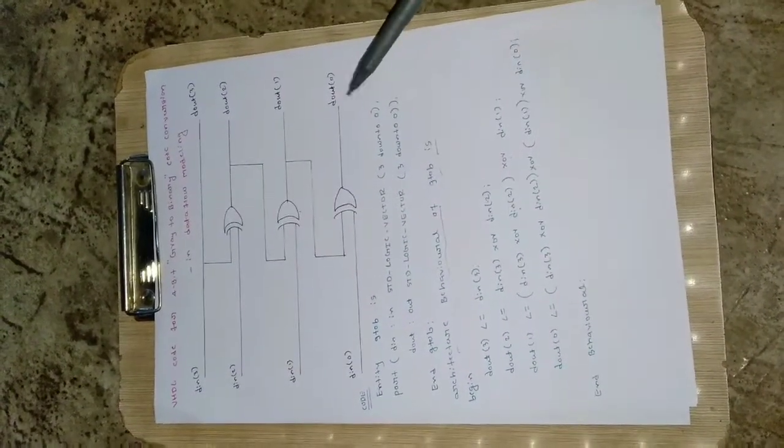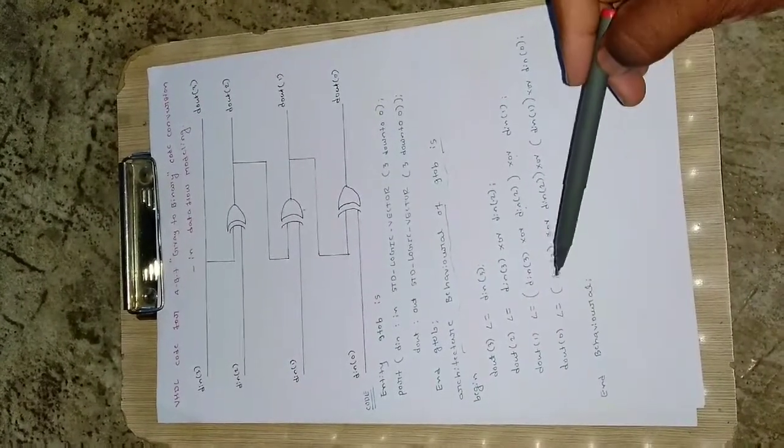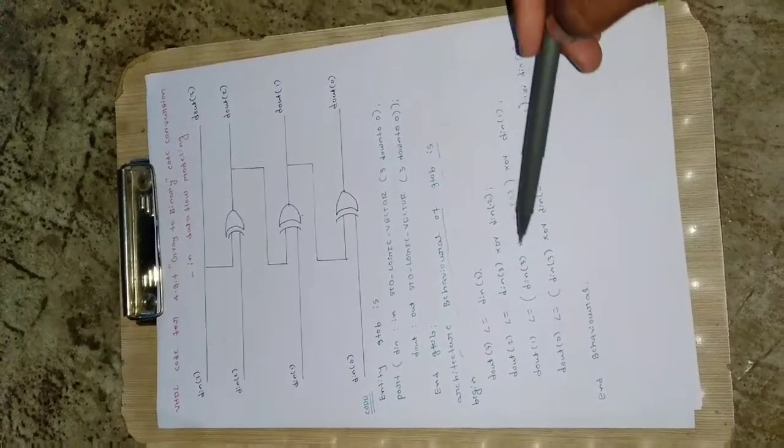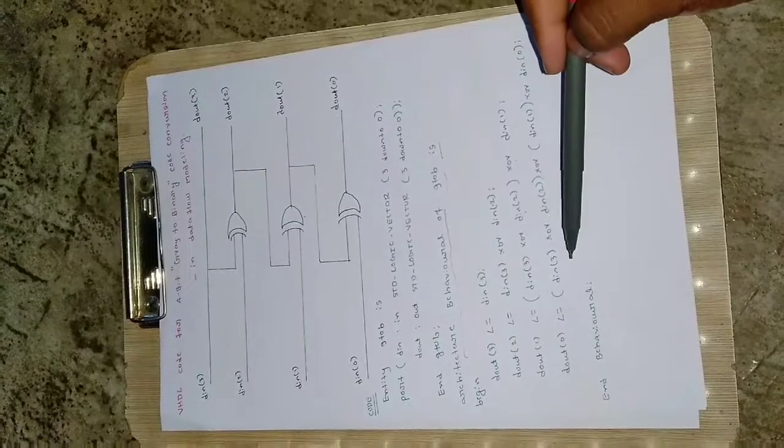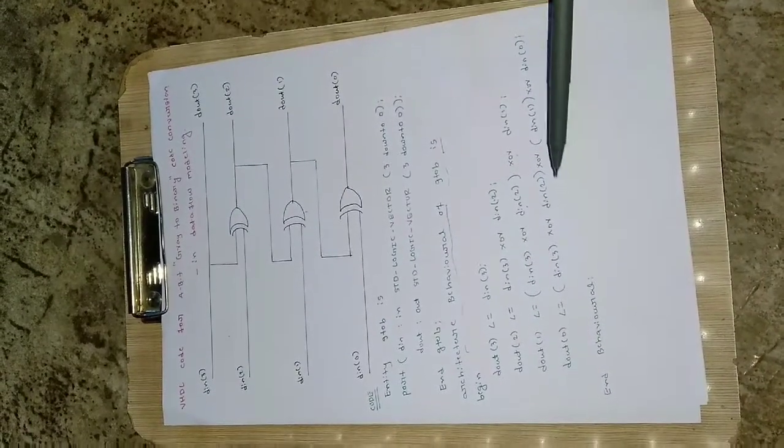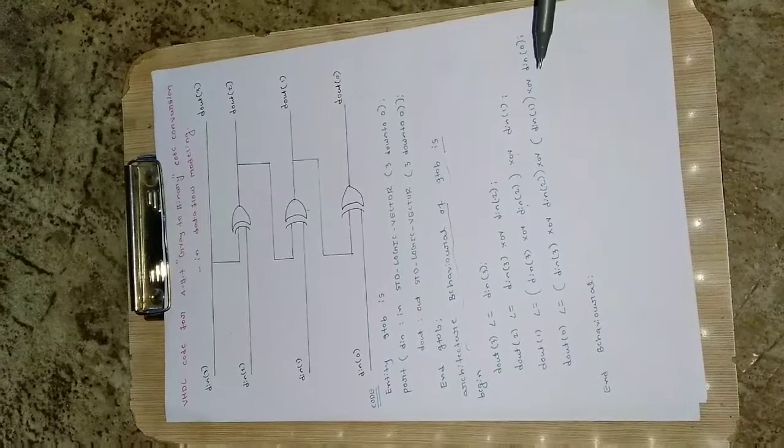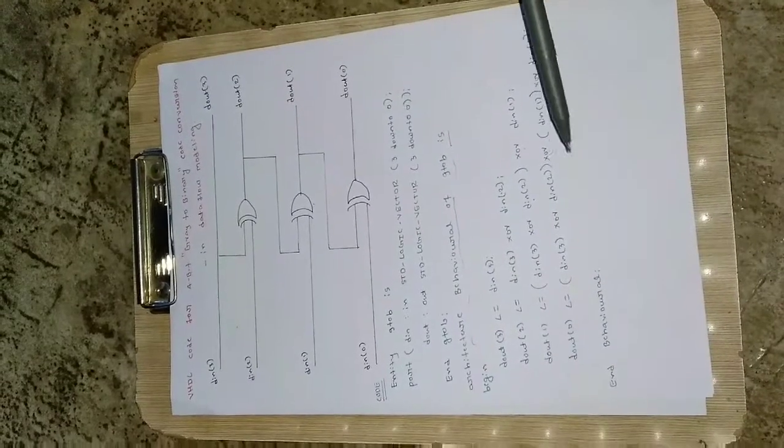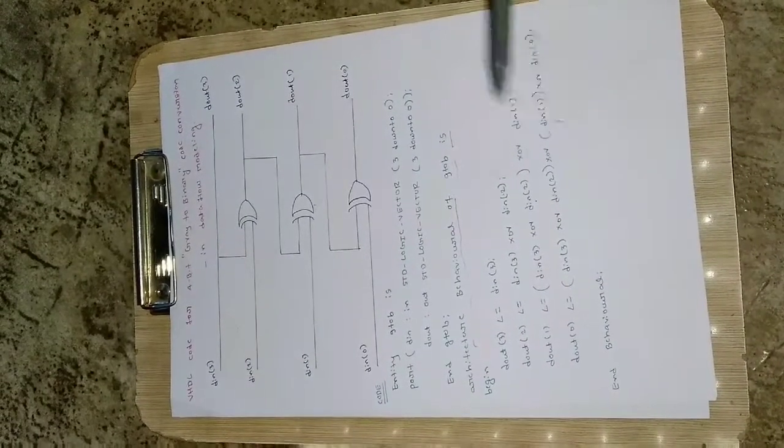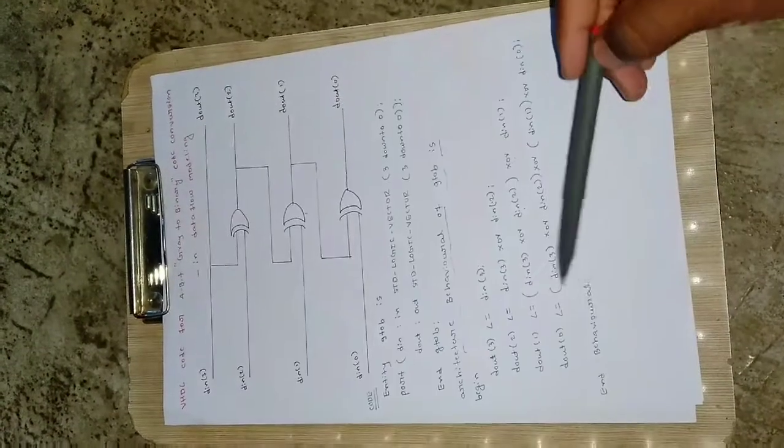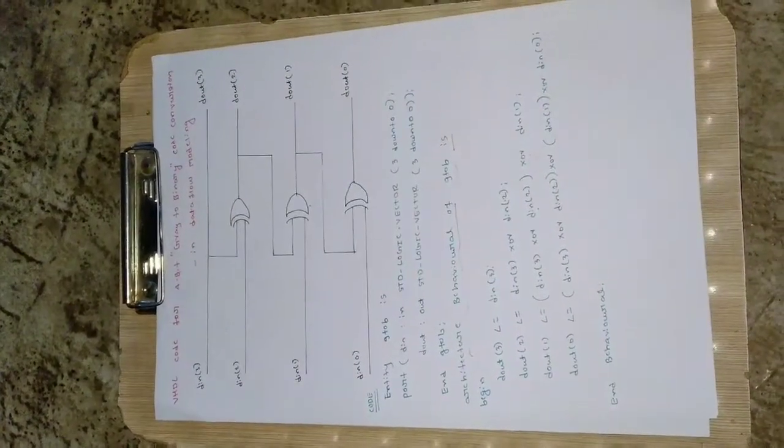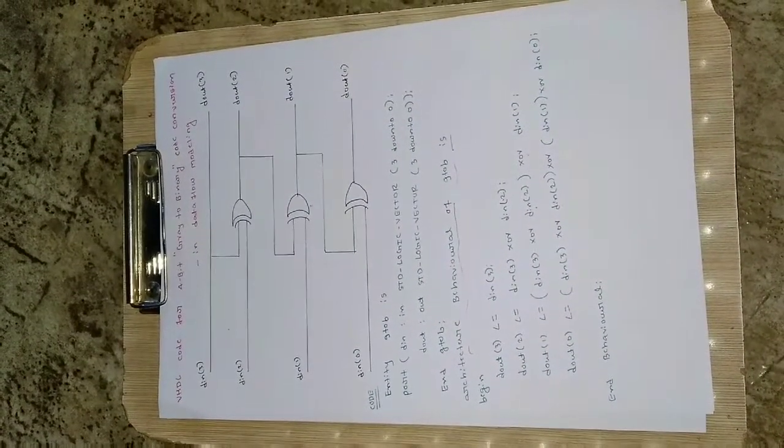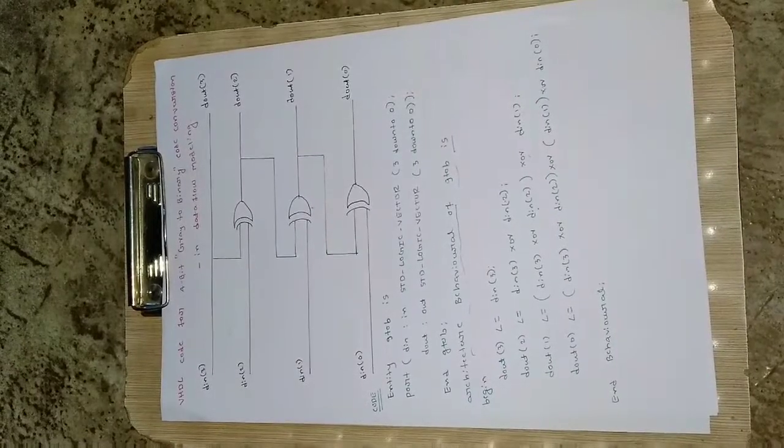Then we have got D out of 0, so D out of 0 is assigned with D in of 3 XORed D in of 2 XORed D in of 1 XORed D in of 0. All these are XORed together to give the D out of 0 output. End behavioral. Like this with the help of simple assignment statements we can write the code for 4-bit gray to binary code conversion.